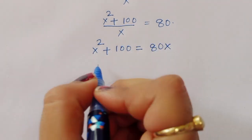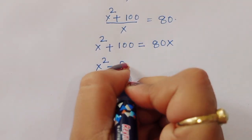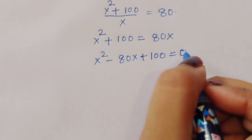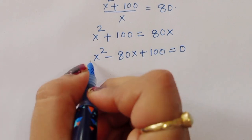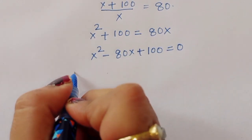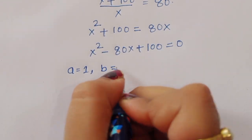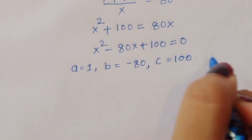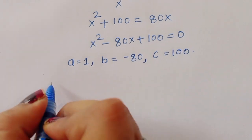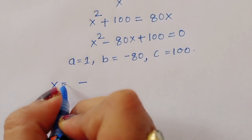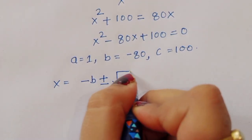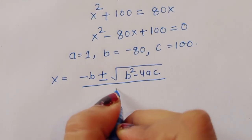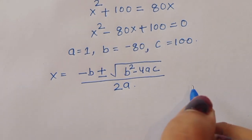For the quadratic x² − 80x + 100 = 0, the coefficients are: a = 1, b = −80, and c = 100. Using the quadratic formula: x = (−b ± √(b² − 4ac)) / (2a).